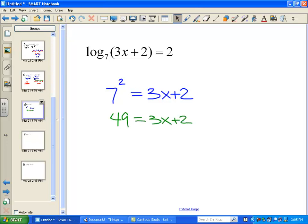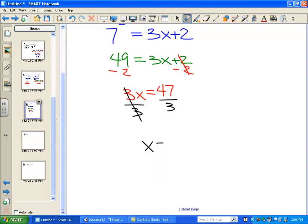and then we'll just solve from here. We'll subtract 2, and I get 3x is equal to 47. I went ahead and switched sides there, and then I'll divide by 3, and it looks like I get x is equal to 47 over 3.